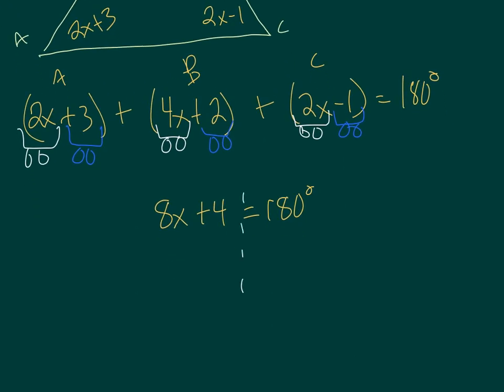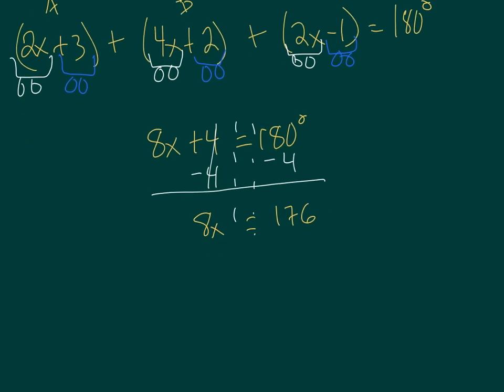Solving for x, reverse order of operations tells me to get rid of this 4 first by subtracting. And bring it on down, 8x is equal to 176. The last step is to divide on both sides. So now you've got x equals, 8 goes into 17 two times with a remainder of 1, and then 8 goes into 16 two times. So x is 22.